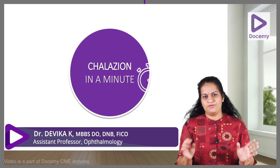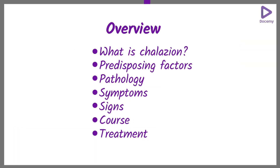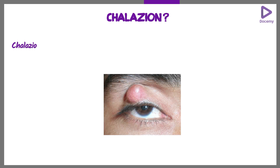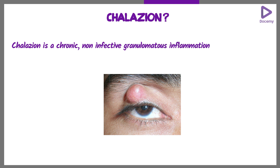Chalazion in a minute. So what is a chalazion? Chalazion is a chronic, non-infective, granulomatous inflammation of the meibomian gland. Each term is important: chronic, non-infective, granulomatous inflammation of the meibomian gland.